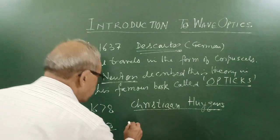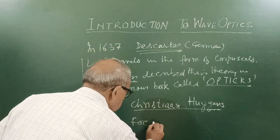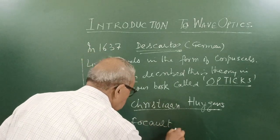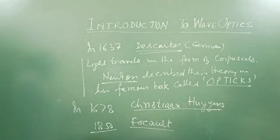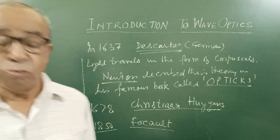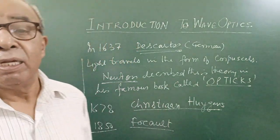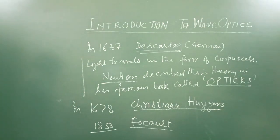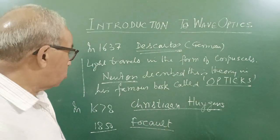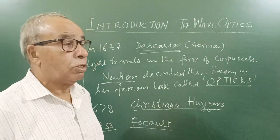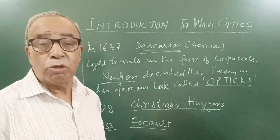When Foucault determined the speed of light in water and found that speed of light in water is less than air, and theory of Huygens was accepted on this ground.